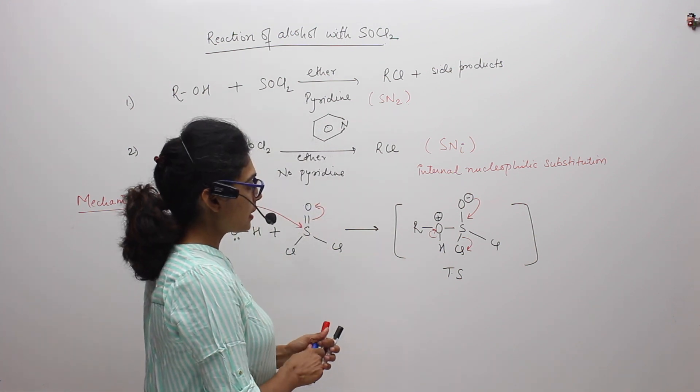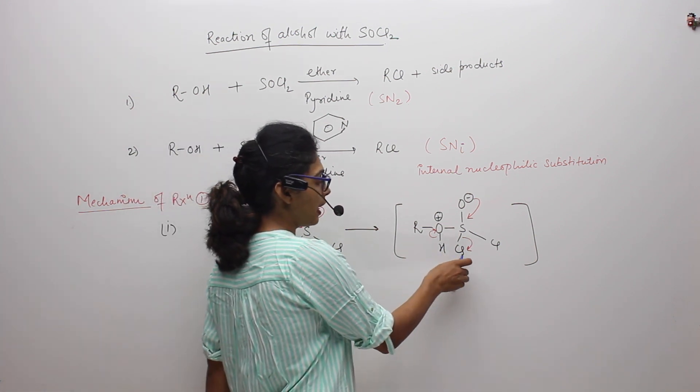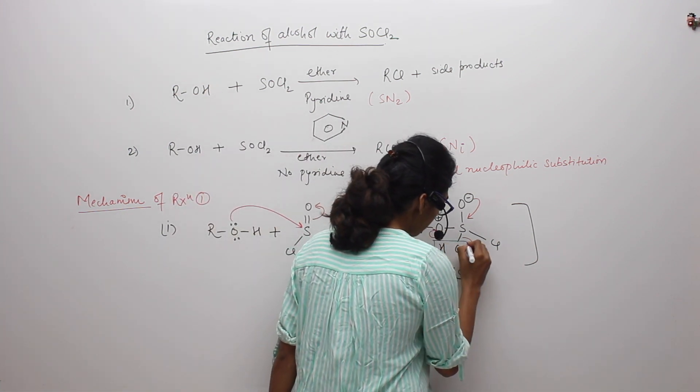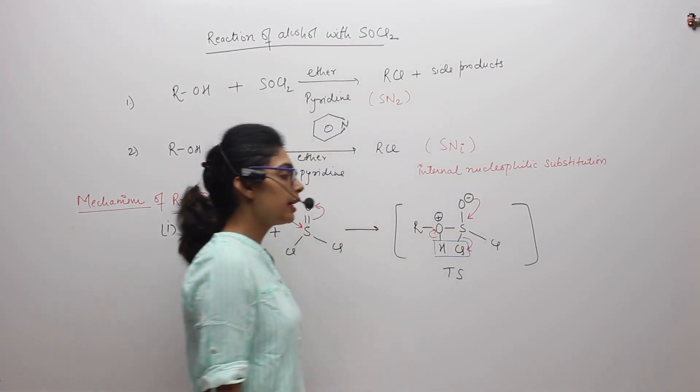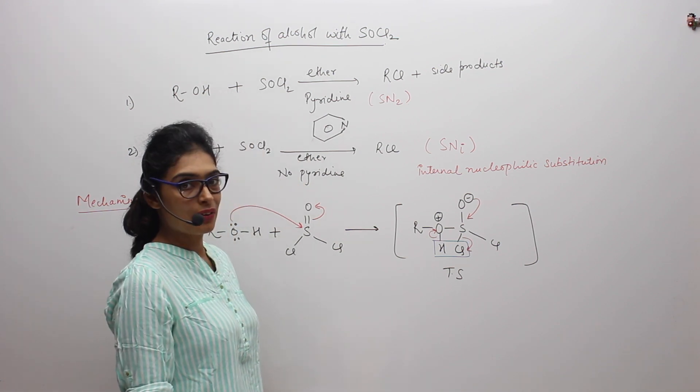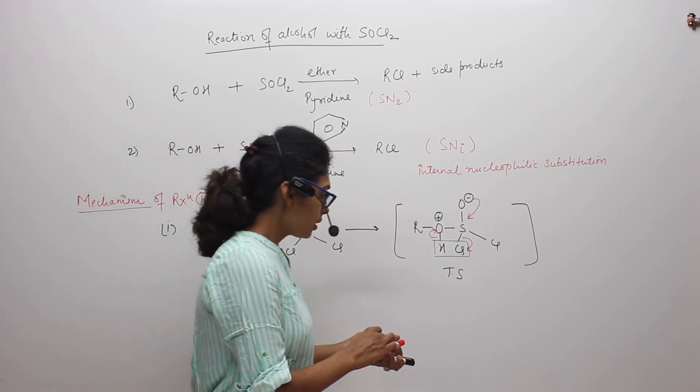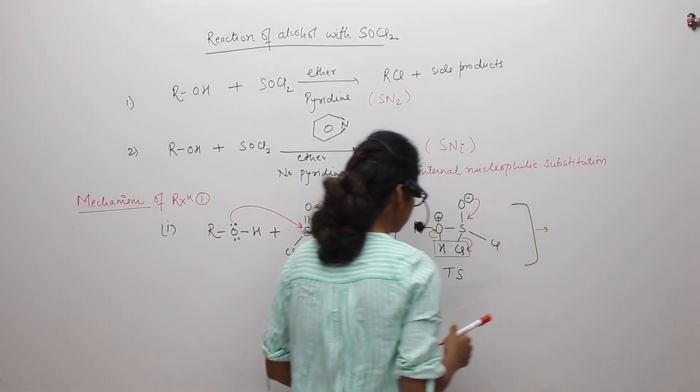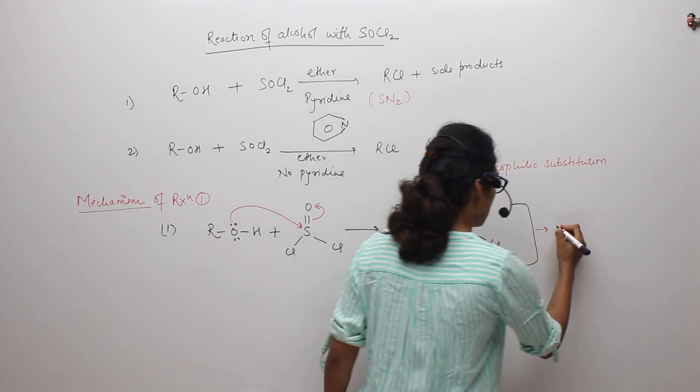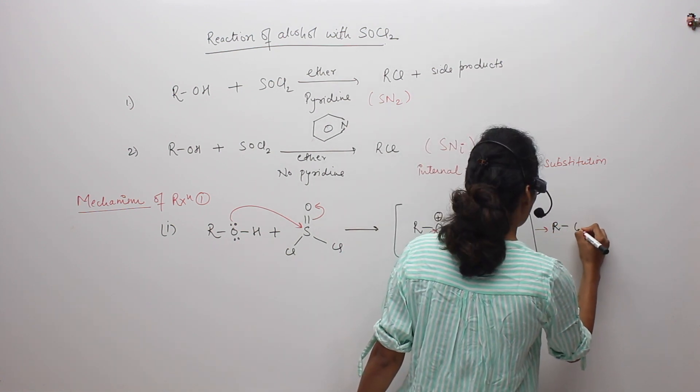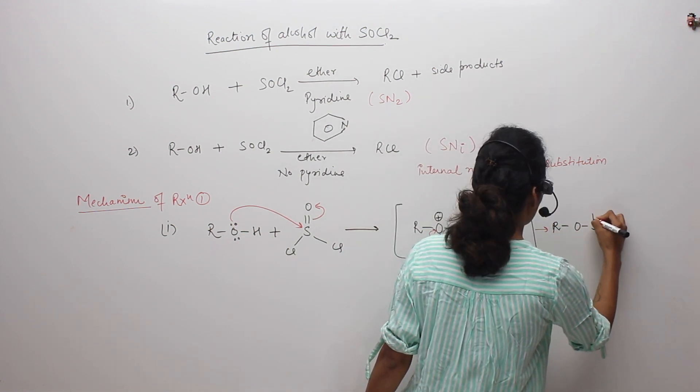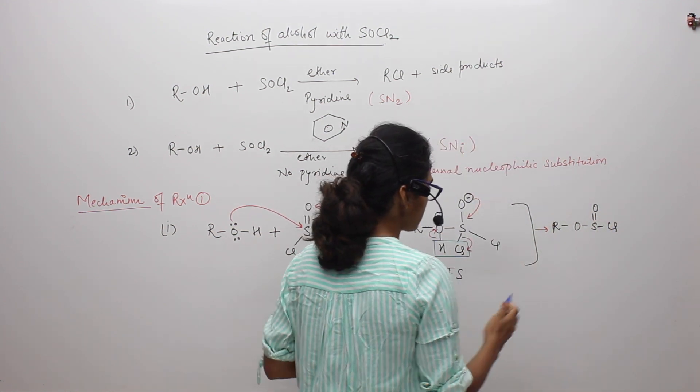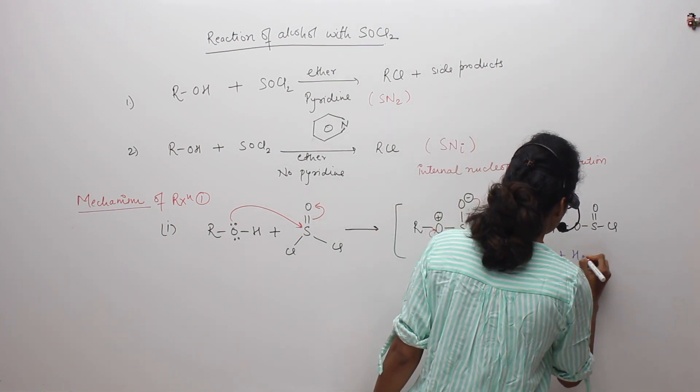So that means in this reaction, hydrogen as well as chlorine both will be coming out. Both will come out in the reaction as a product. So that means we can say HCl will come out as a product. So eventually the products formed will be R-O-S double bond O-Cl plus HCl.